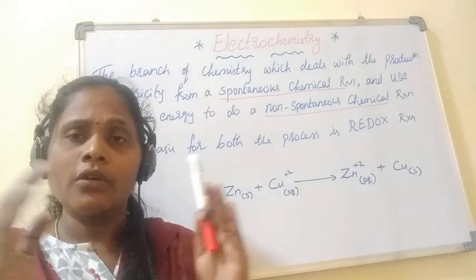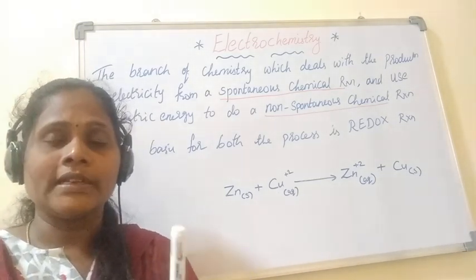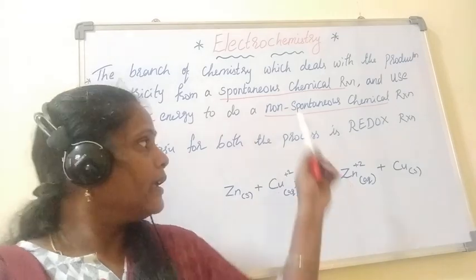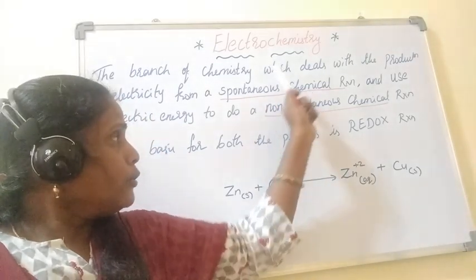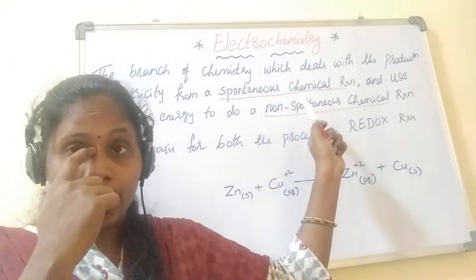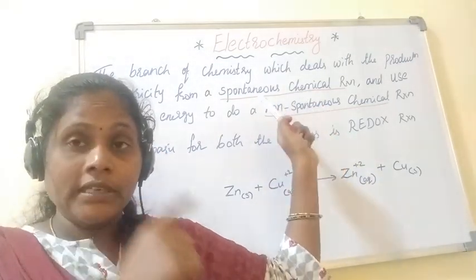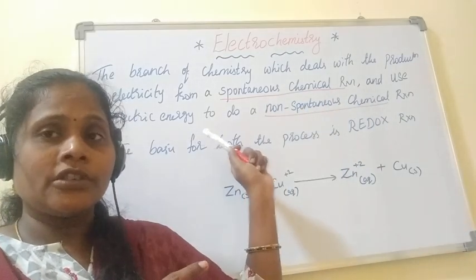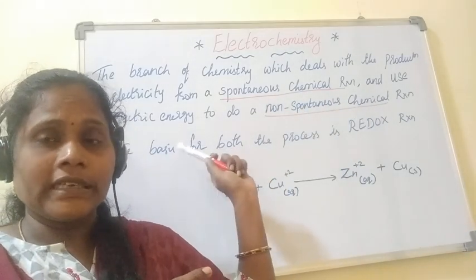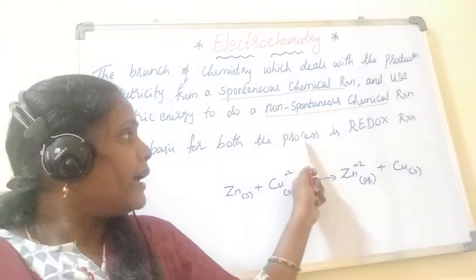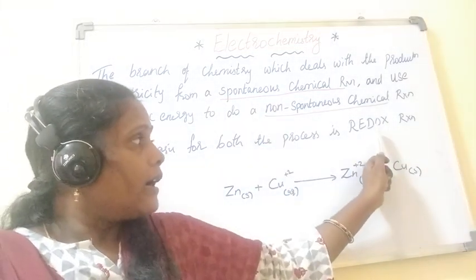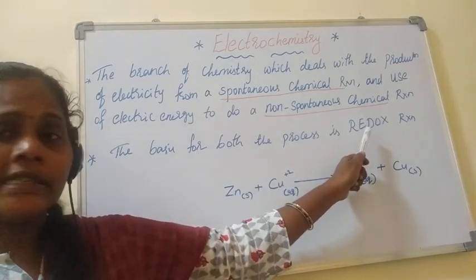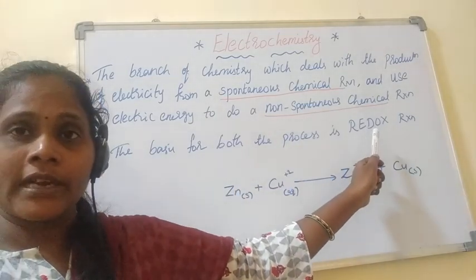So what all these processes are and how they happen, we will discuss in this chapter. To convert electric energy to chemical energy, or chemical energy to electrical energy, we require a redox reaction. The basis for these two processes is the redox reaction.